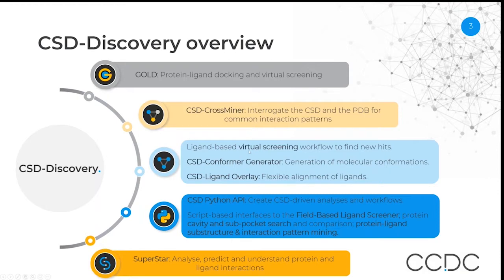All of the above tools are available through our GUI interface, but also one can use the CSD Python API. You can run all of those workflows programmatically, and also you can use the field-based ligand screener through the Python API. We also have a set of knowledge-based tools based on the CSD that includes SuperSTAR, so you can analyze, predict, and understand protein and ligand interactions using SuperSTAR.